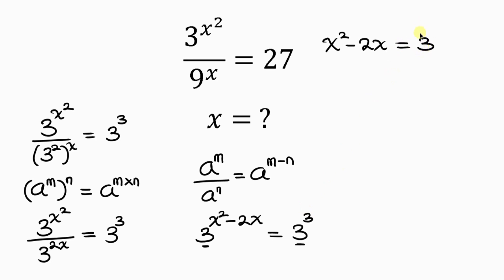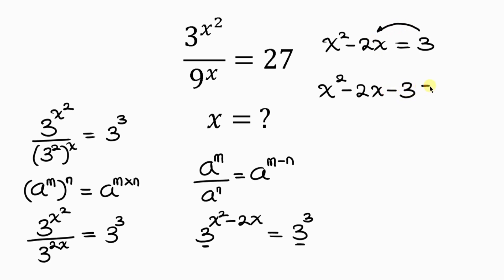Our next step is to move this 3 to the left-hand side, so that we have x squared minus 2x. As 3 crosses to the left, it becomes minus 3, and this is equal to 0.